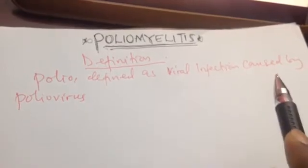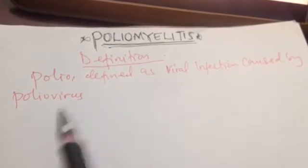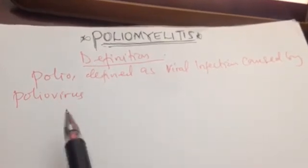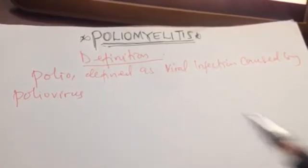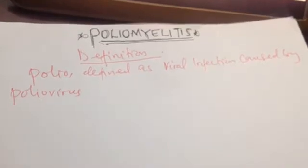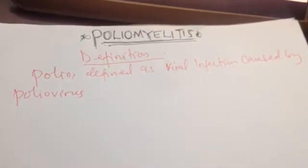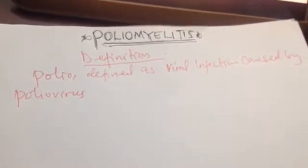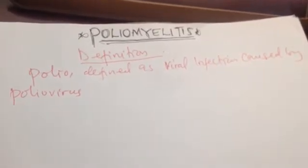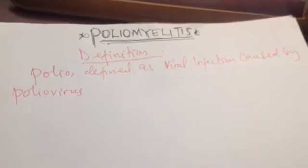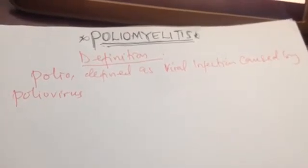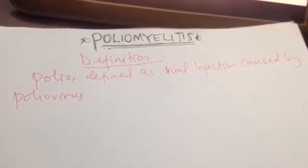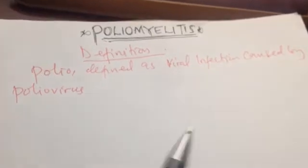So poliomyelitis is defined as the viral infection caused by poliovirus, and the symptoms range from either asymptomatic or minor illness to complete paralysis of a particular muscle group.